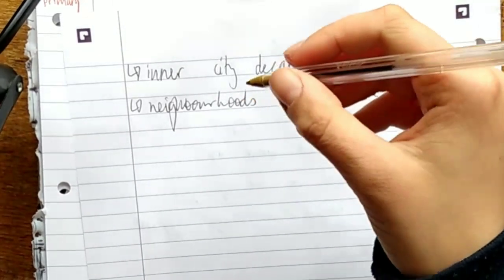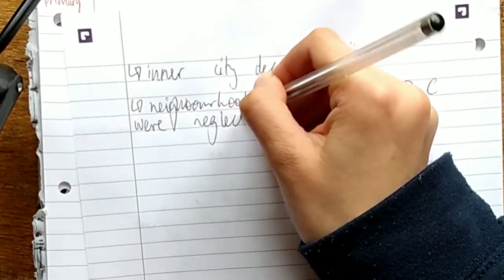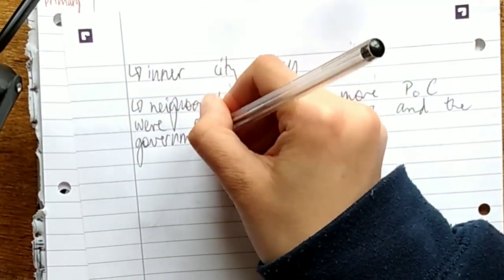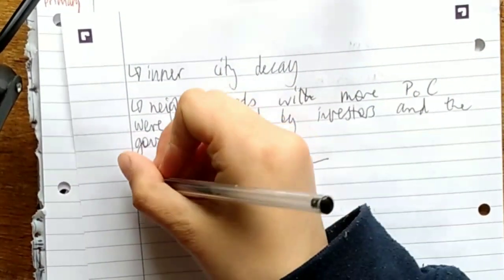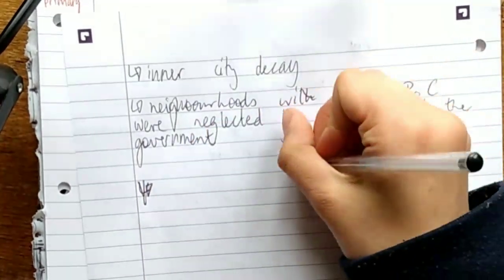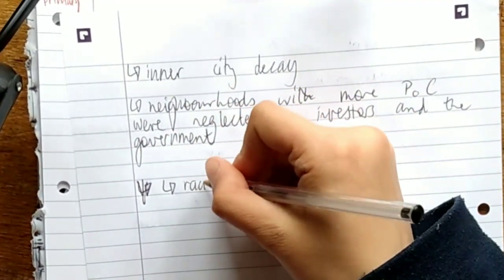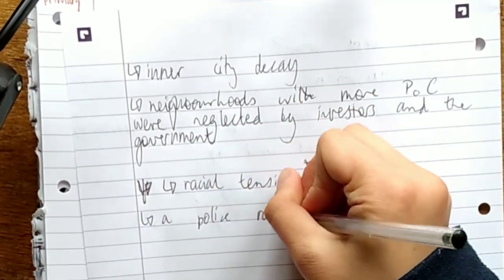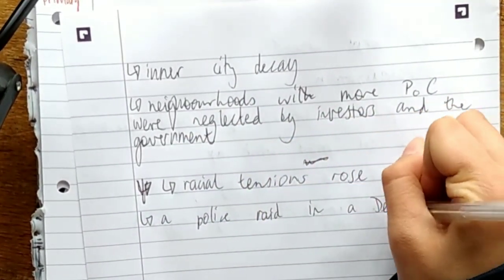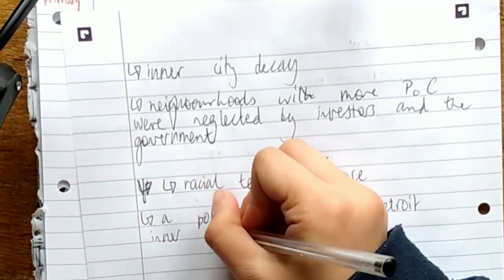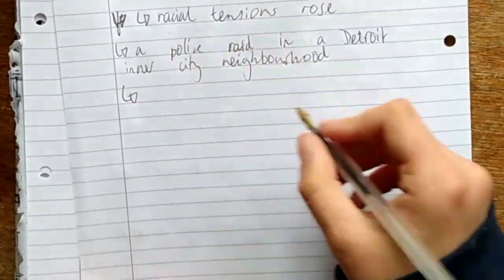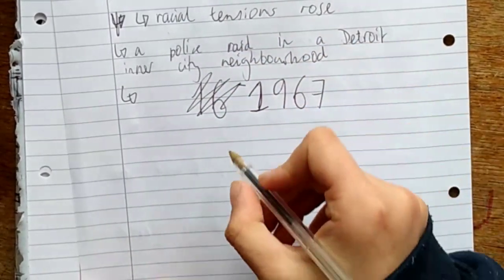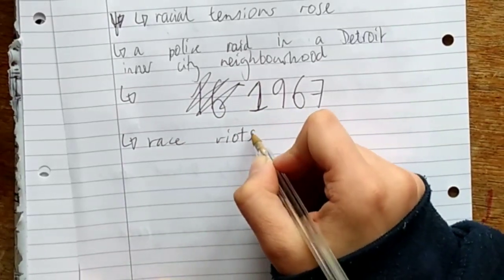This added to the inner city decay that was occurring as a result of deindustrialisation because neighbourhoods with more people of colour in them were neglected by the government and by businesses and investors, and also they were more harshly policed. As a result of this heavy policing and neglecting from the government, tensions rose in inner city areas and a police raid on in near west side in inner city Detroit resulted in race riots.